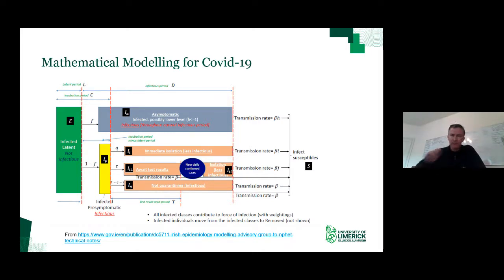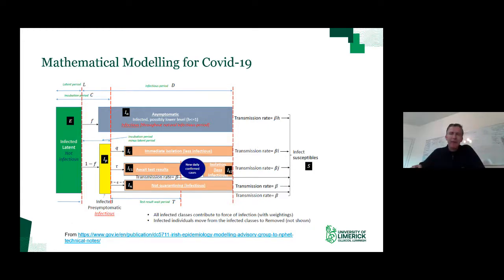The slide references technical notes released on the Department of Health website, where there's further detail if you're interested in these models. One of the models we're using for COVID-19 is a compartmental model. People infected with COVID-19 have the virus in a latent phase for three to four days, then there's one to two days during which they're not yet showing symptoms, but are already infectious. This work is based on extensive literature reviews by a biological parameters team. Our job is to turn that into a mathematical model and then into a set of equations to help predict what will happen in the future.